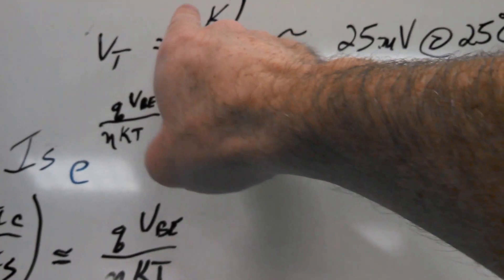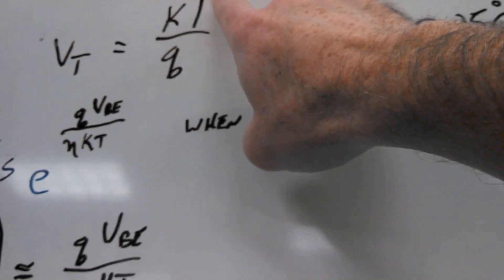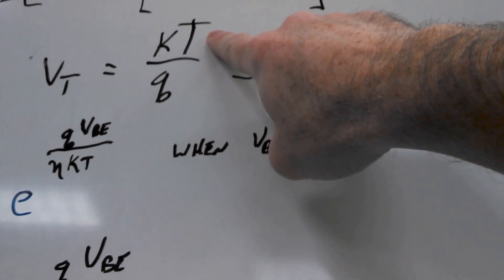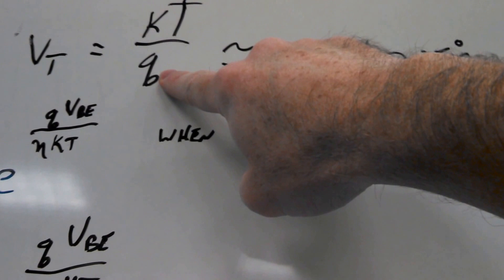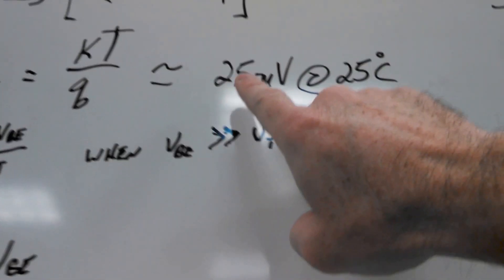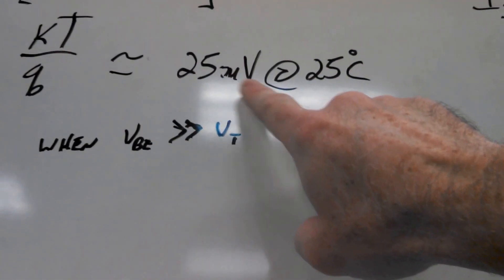VT is the thermal voltage, that's Boltzmann's constant times the absolute temperature in Kelvin divided by the elementary charge of an electron. It's about 25 millivolts at 25°C.